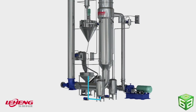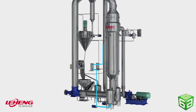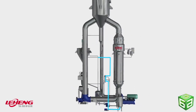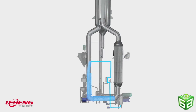After being preheated by a primary heat exchanger, feed liquid temperature will increase. Through a feed pump, feed liquid will be transported to the forced circulation evaporation system.